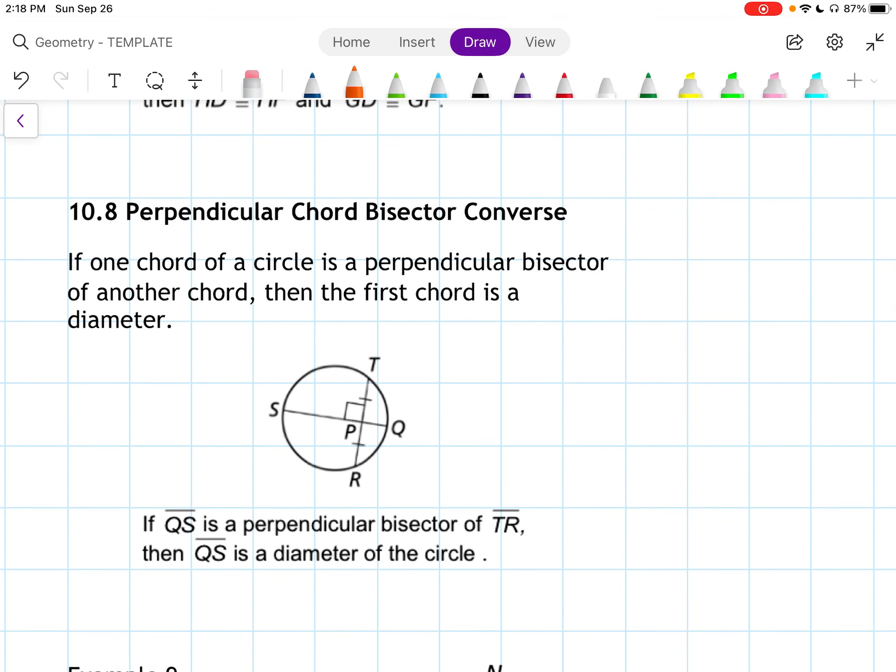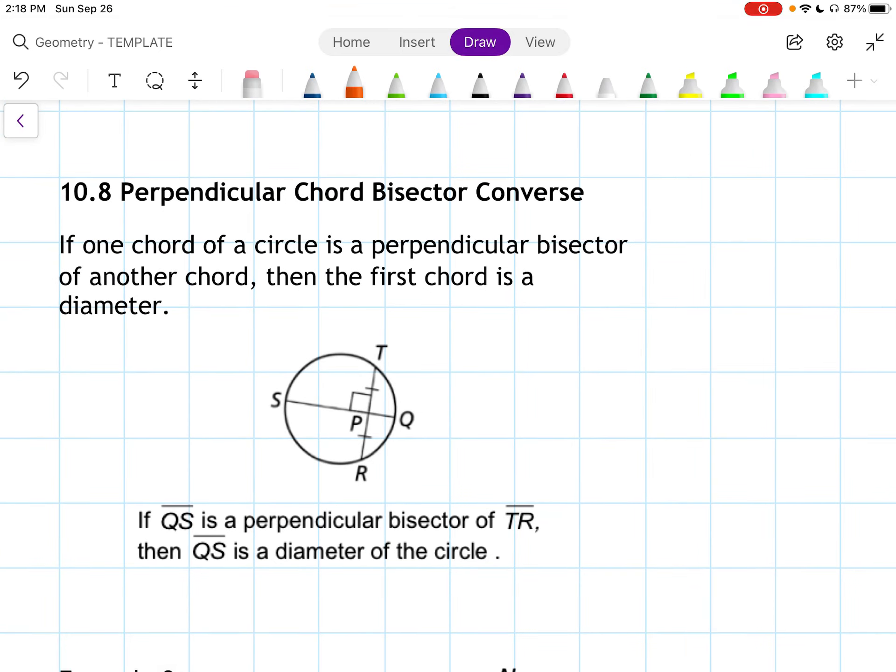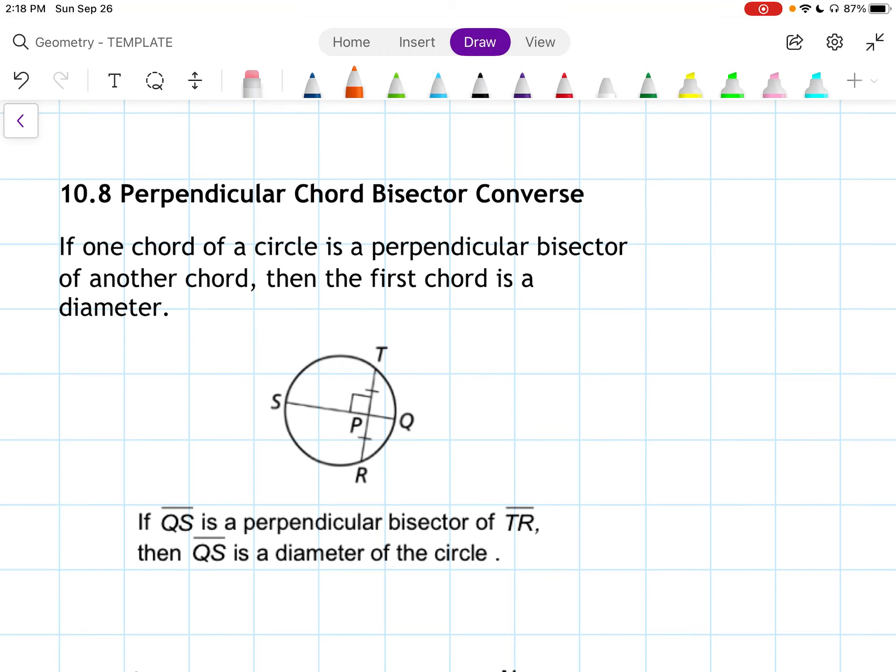10.8, the perpendicular chord bisector converse. If one chord of a circle is a perpendicular bisector of another chord, then the first chord is a diameter. So in this picture here, we don't have the center of the circle marked, but we know that the center of the circle would lie on SQ because it has to be a diameter.